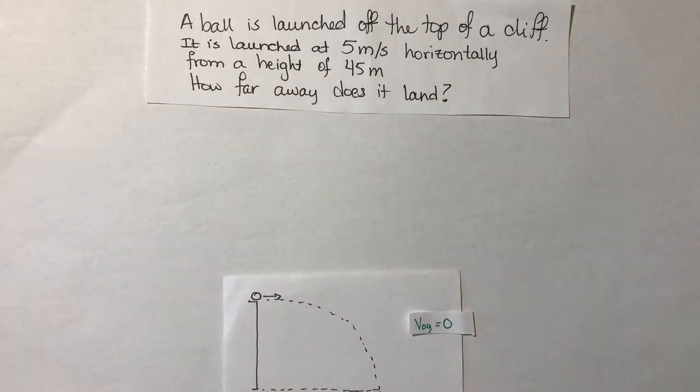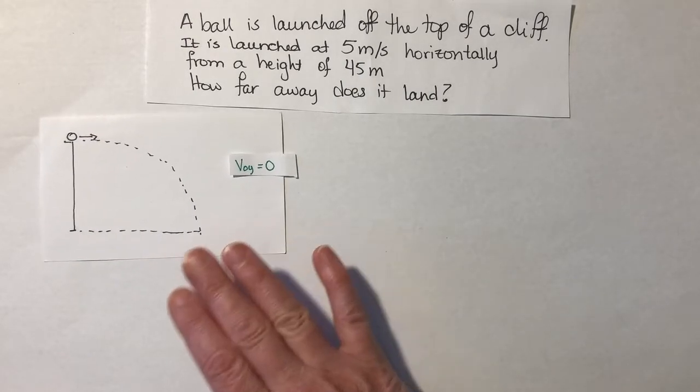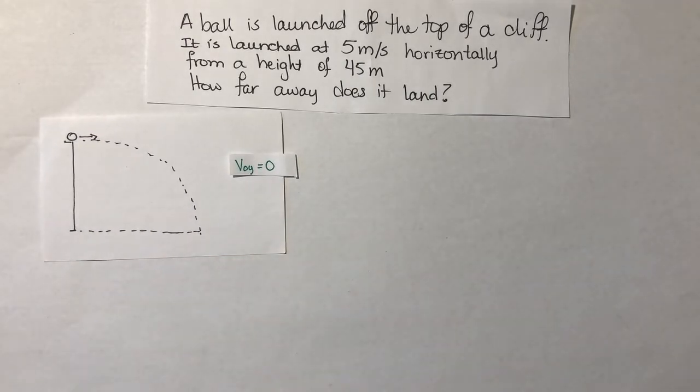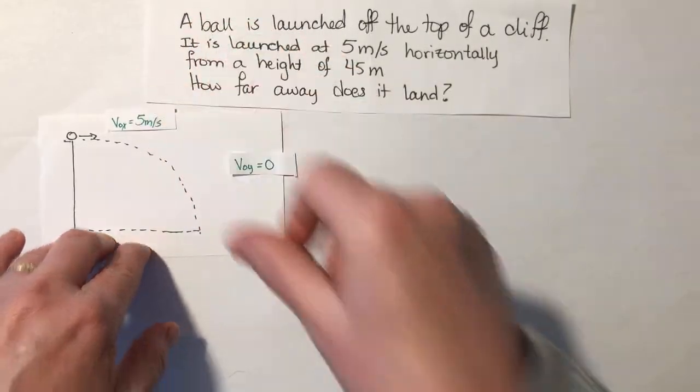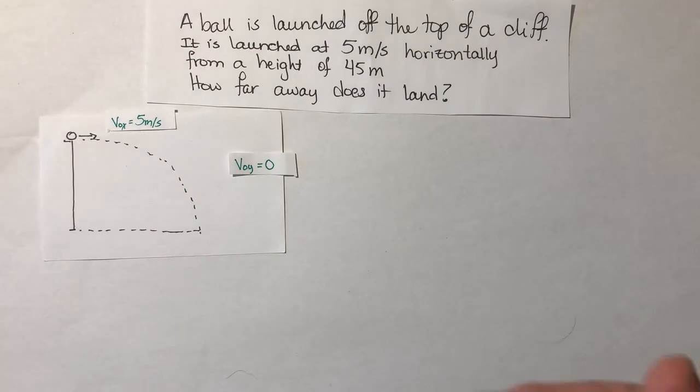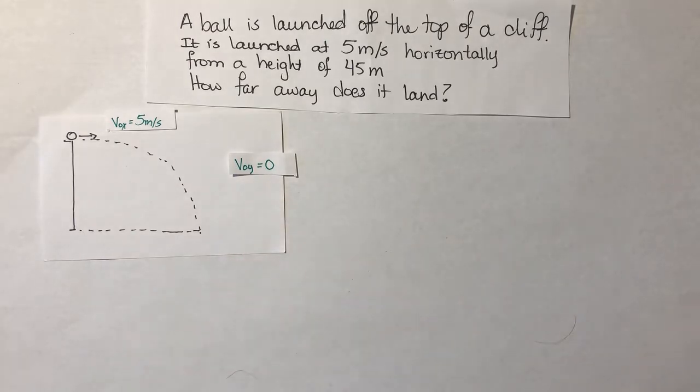First step in solving any physics problem is going to be to make a sketch. So I've made my sketch here, and then I'm going to label it with everything that I know and everything that I don't know. So when it says the ball is launched with an initial speed of 5 meters per second horizontally, that is v0 in the x direction. We can talk about initial velocity in the x direction and initial velocity in the y direction. The other thing it tells us that we know is it was launched from a height of 45 meters. So that tells me that my cliff height or my dy is 45 meters.